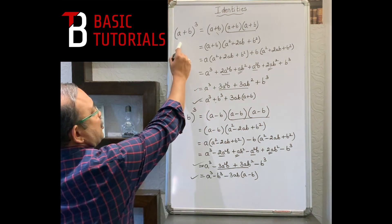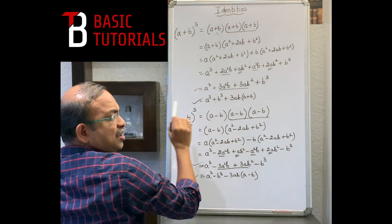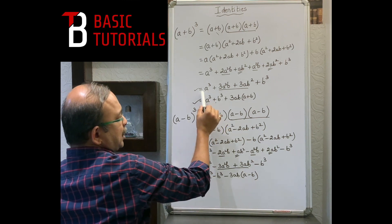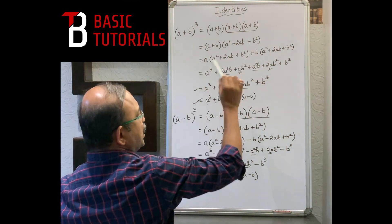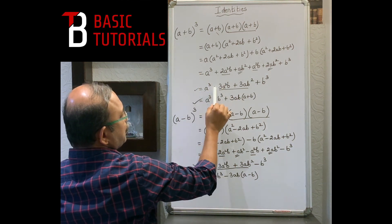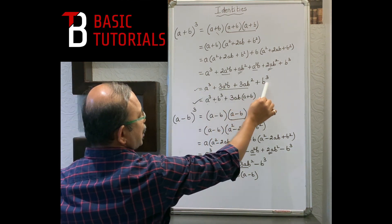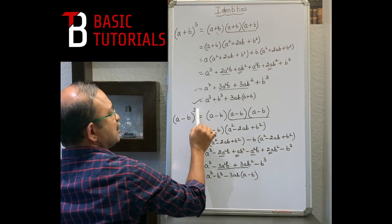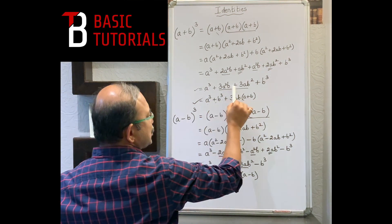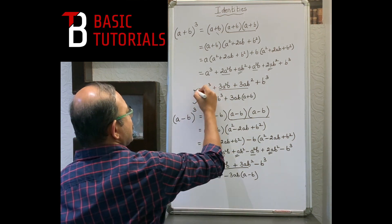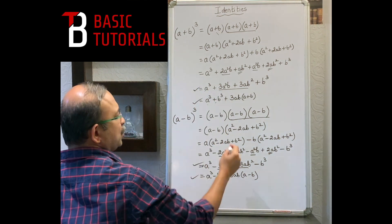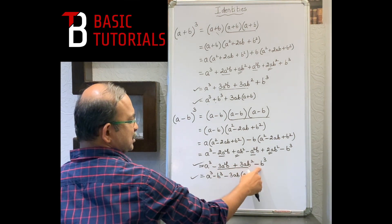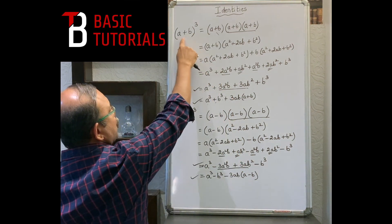Next important identity: (a+b)³ and (a-b)³. The terms are the same in both; the only difference is the signs. For (a+b)³, signs are all positive: a³ + 3a²b + 3ab² + b³. For (a-b)³, signs alternate: a³ - 3a²b + 3ab² - b³.